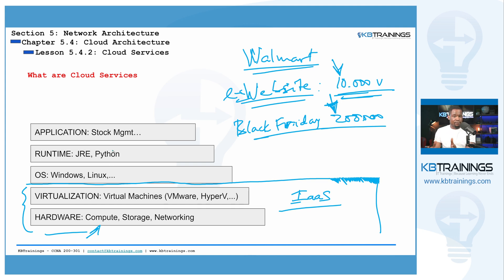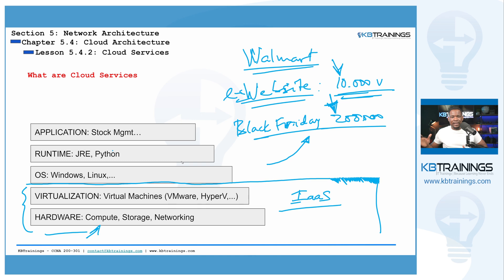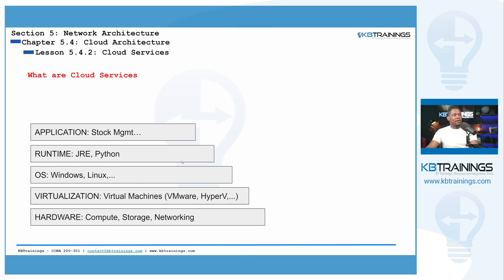If you're using a cloud service provider and it's Black Friday, you know you're expecting a lot of visitors. As visitors start increasing on your web server, you can submit an order to extend capacity — your CPU capacity or whatever you need — for your website to handle the load. That's why Infrastructure as a Service is very good: you have the flexibility to extend or reduce your services as needed, and you pay per use.